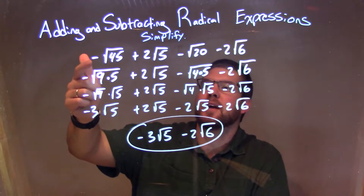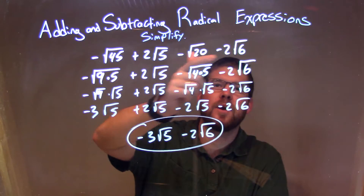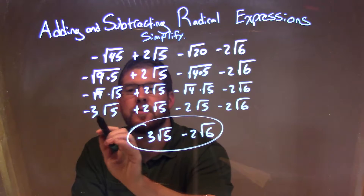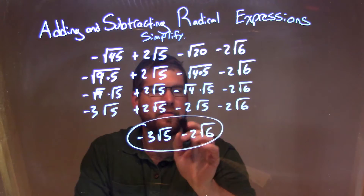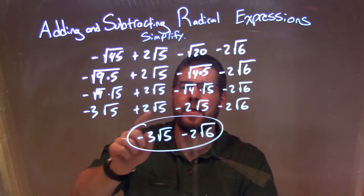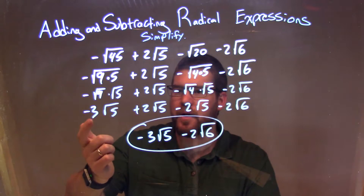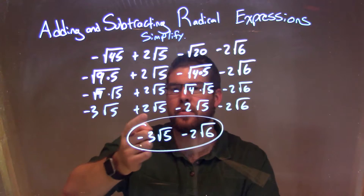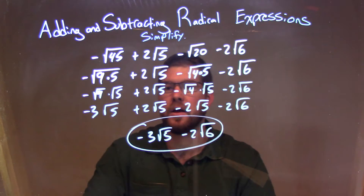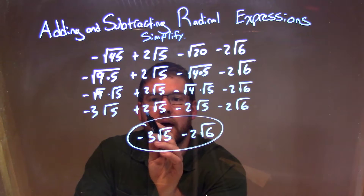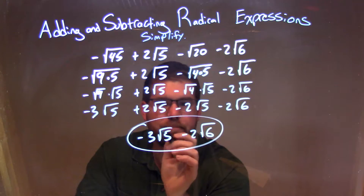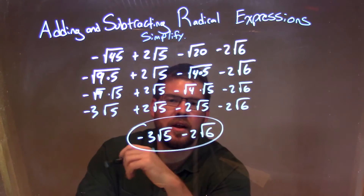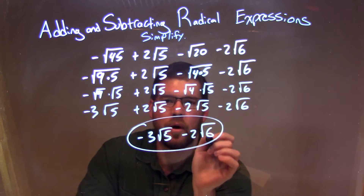So let's recap. We were given negative square root of 45 plus 2 square root of 5 minus the square root of 20 minus 2 square root of 6. I simplified each one of my square roots as much as possible, and they brought me down to negative 3 square root of 5 plus 2 square root of 5 minus 2 square root of 5 minus 2 square root of 6. I combined all of them that had the same square roots. Looking at the numbers out front: minus 3 plus 2 is minus 1, and then minus 1 minus 2 is minus 3. So our final answer is minus 3 square root of 5 minus 2 square root of 6.